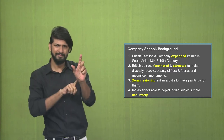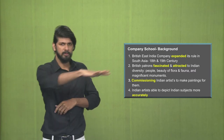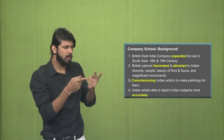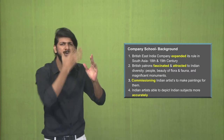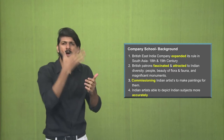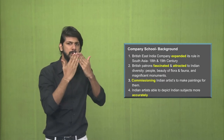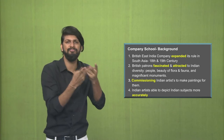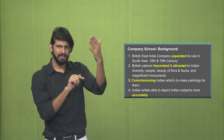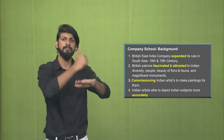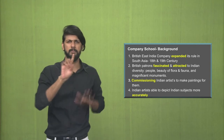Now we understand the meaning of the company school. With the arrival of British merchants and British patrons, they were really fascinated and attracted by the magnificent monuments, the beautiful flora and fauna, and the diversity of the Indian people, which led to the establishment of the East India Company. Gradually, they expanded their rule in South Asia, somewhere in the 18th till the 19th century.